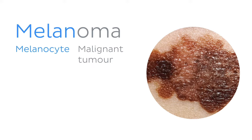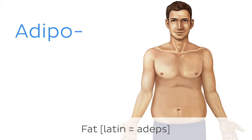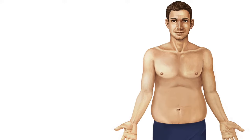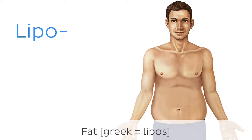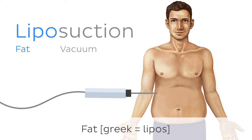Going deeper again, the root word adipo comes from the Latin adips, which means fat. You'll see it in terms like adipometer, or skinfold caliper, used to measure the thickness of skin to calculate the amount of subcutaneous fat we're carrying. You'll probably be more aware of its Greek cousin, lipo, featured in well-known terms like liposuction, which needs no definition.